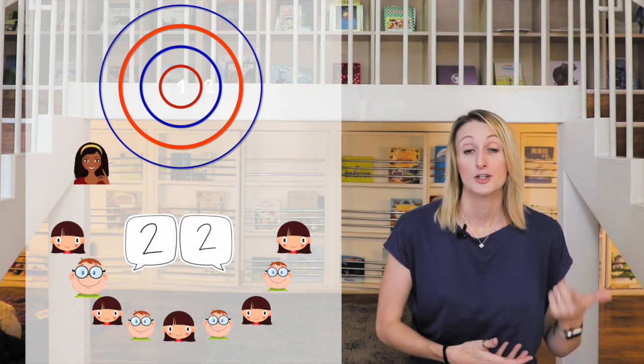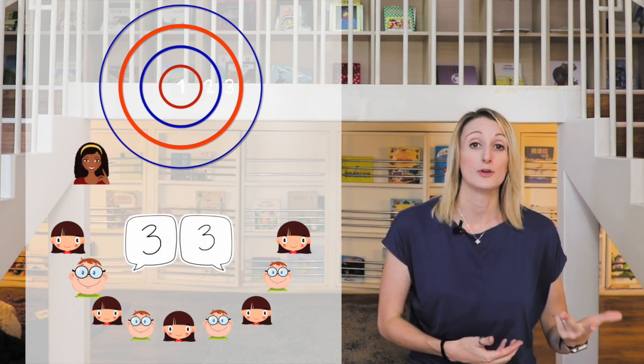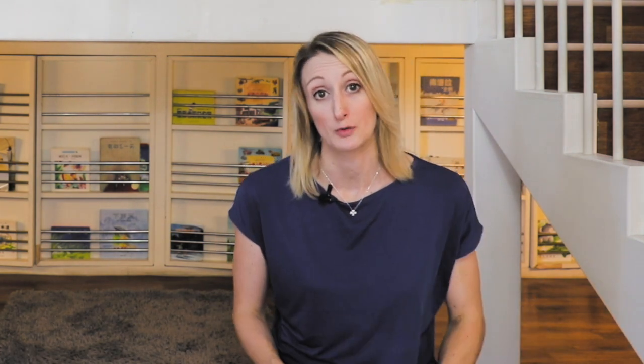Next, label each circle with a number having the students count along as you do: one, two, three, four, five. Then you're going to take those flashcards and write a number on the back of each one, and place them in a line indicating where students will throw from.